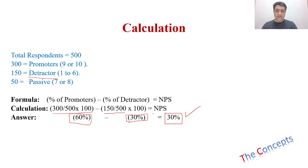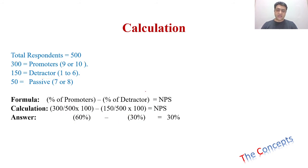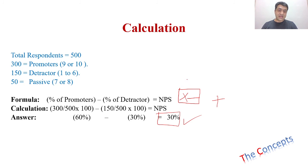We call it net promoter score because we are not taking all promoters — net promoters are the promoters minus the detractors. For interpretation: if the net promoter score is positive, the company is doing well and customers are likely to recommend the product. If it is negative, the company is not doing well and customers are unlikely to recommend the product.